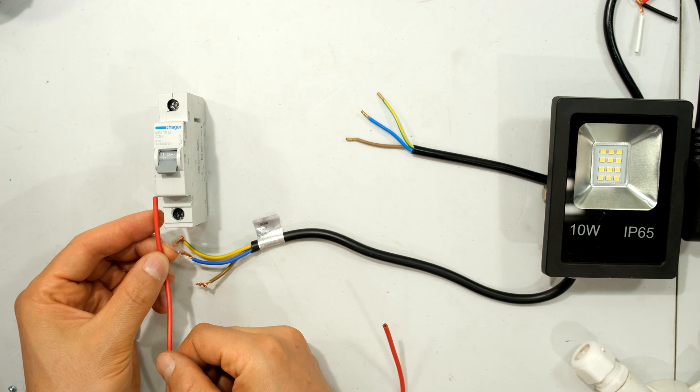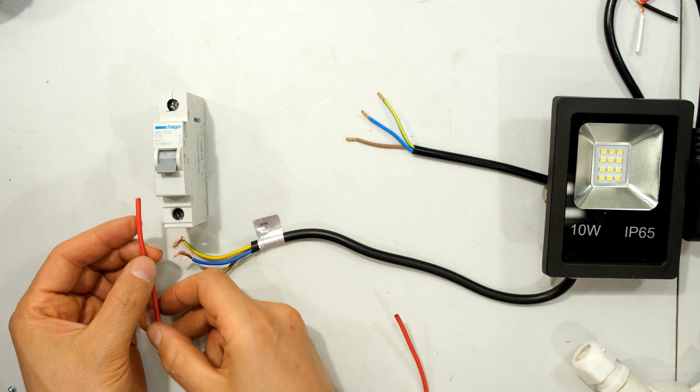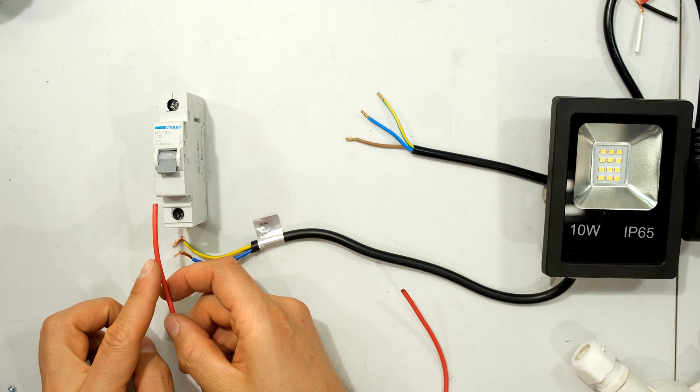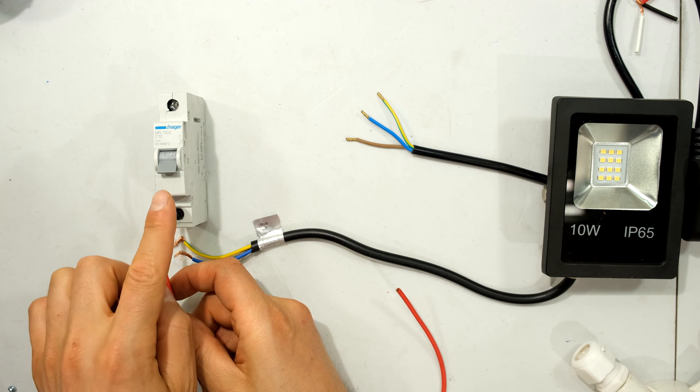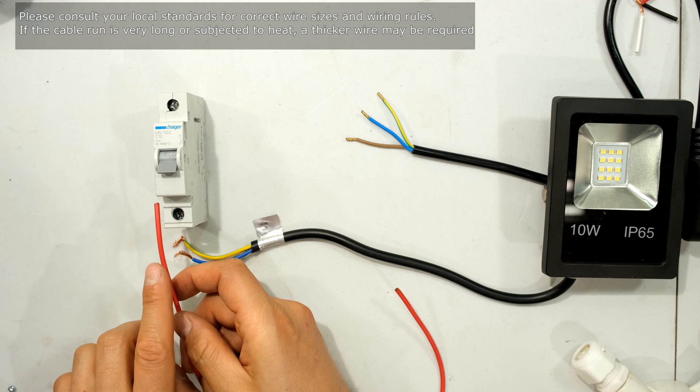There are specific rules about wire size for circuit breakers. I'm just giving a brief explanation that the wire must be able to handle higher current than the circuit breaker. The reason being is that the circuit breaker must trip before the wire burns.